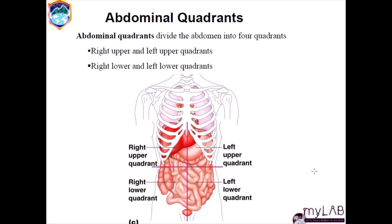In the abdominal cavity, we have what we call quadrants — dividing the abdomen into four quadrants. There is a line dividing the abdomen into quadrants: the right upper quadrant, then below it the right lower quadrant, then the left upper quadrant, and the left lower quadrant. These quadrants are important for being able to locate several organs within the body, as human anatomy is simply describing where each organ is.